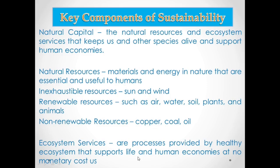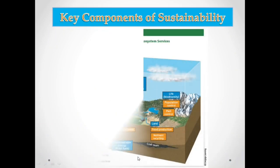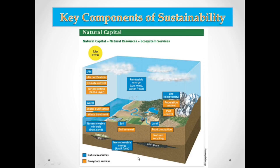I have a picture here to help fully understand what natural capital is. As stated, natural capital includes natural resources plus ecosystem services. For example, air is a renewable resource, and its associated ecosystem services include air purification, climate control, and UV protection — such as the protection of the ozone layer.